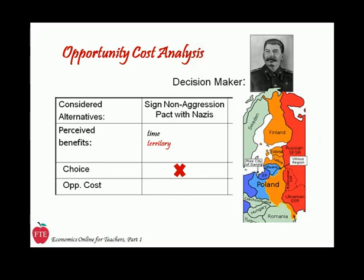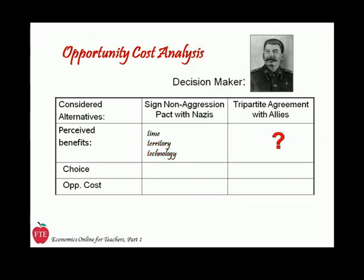Not bad at all, from Stalin's perspective. Depending on the depth of our analysis, we could add other benefits — access to Nazi intelligence and technology, for example. In any case, there were great benefits to signing the pact. What about the alternative of working with the Allies? It's harder to find things to fill into that benefits box. There's no love lost between the Nazis and the communists, but Stalin had shown himself to be more concerned with practical measures. Britain and France were being really resistant about allowing the Russians to march through Poland should war break out. So from Stalin's point of view, there's really not much there.